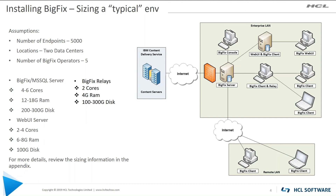BigFix relays require a minimum of two cores, at least four gig of RAM, and some disk space. Depending on the products you're using, you may need more disk space or you can get by with less. The WebUI server — I recommend two to four cores, six to eight gig of RAM, with at least 100 gig of disk. These are numbers derived through testing and your mileage may vary.